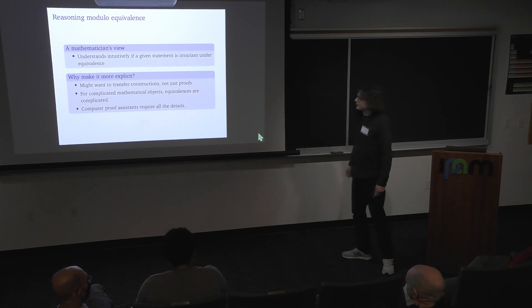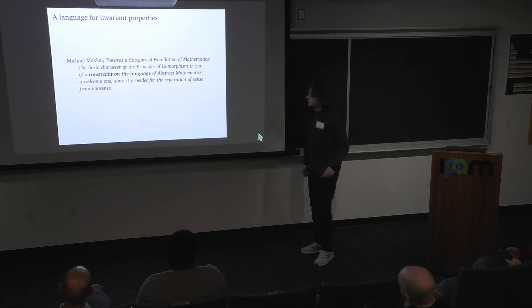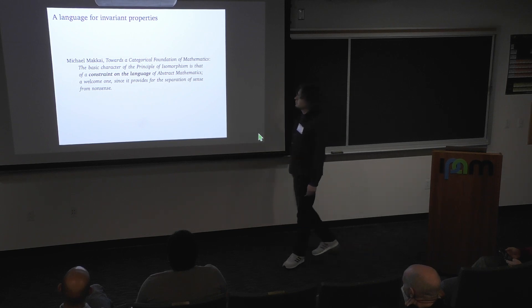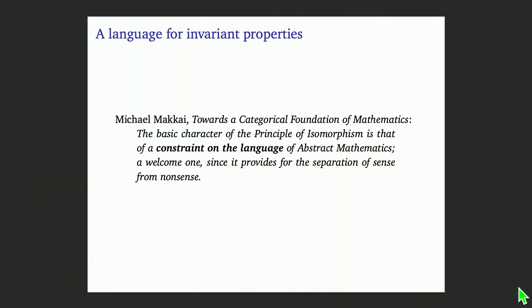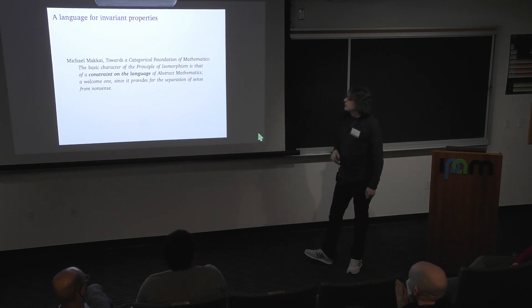Maybe at some point artificial intelligence will take over, but for now we have to give all the details to the machine to check. Mathematicians and logicians have thought a long time about this problem of transfer. Here is a quote by Michael Makkai, who was interested in building a categorical foundation of mathematics. He calls what I call the equivalence principle the 'principle of isomorphism,' saying its basic character is that of a constraint on the language of abstract mathematics — a welcome one, since it provides for the separation of sense from nonsense.